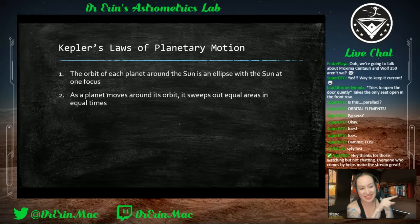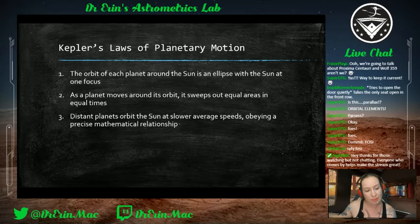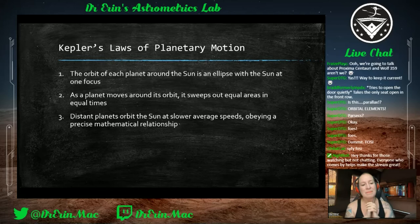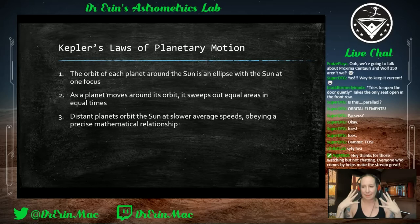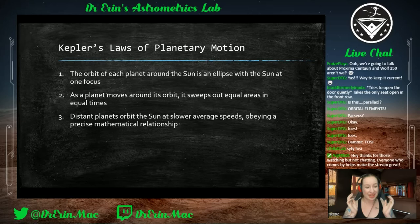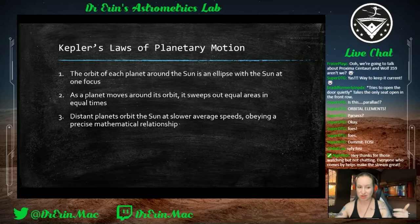Kepler's Second Law: as a planet moves around its orbit, it sweeps out equal areas in equal time. If a planet moves from point A to B over 10 days, the triangular area swept is equal to the area swept from C to D over the same 10 days at a different part of the orbit. It might not look equal, but the planet is closer and faster near perihelion, further and slower near aphelion.